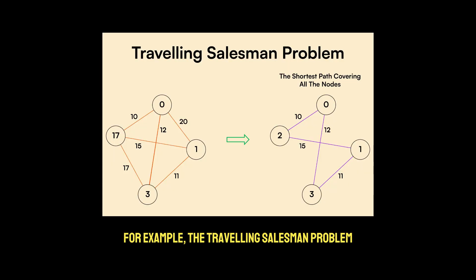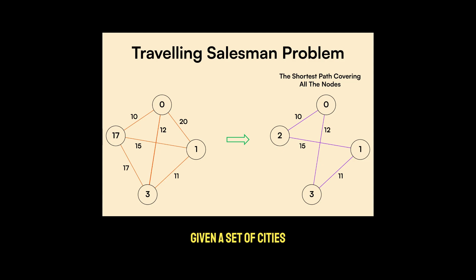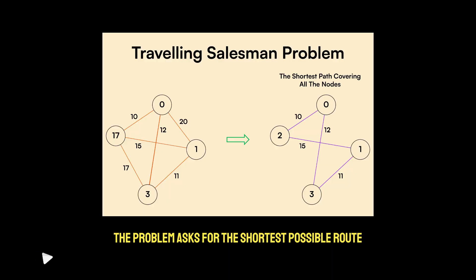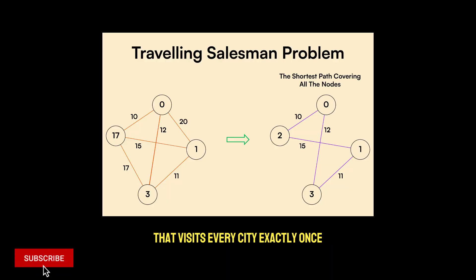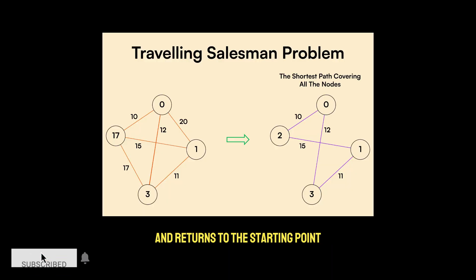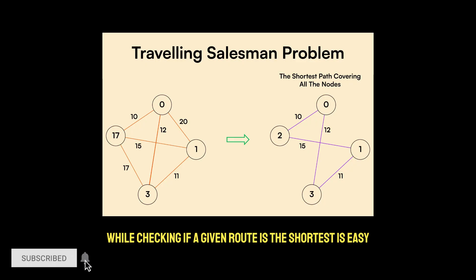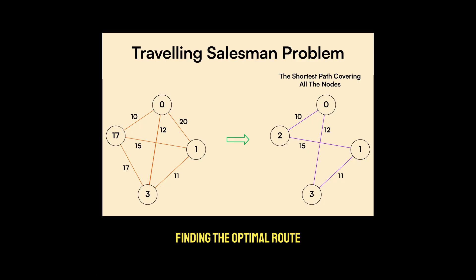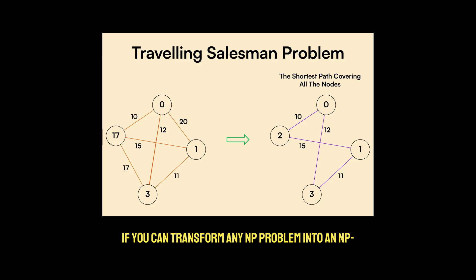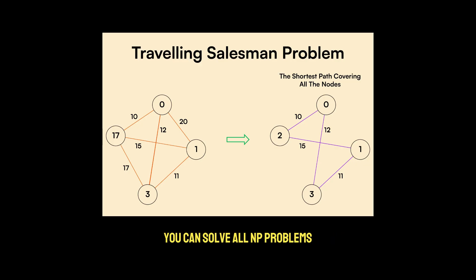For example, the Traveling Salesman Problem, or TSP, is a classic NP-complete problem. Given a set of cities, the problem asks for the shortest possible route that visits every city exactly once and returns to the starting point. While checking if a given route is the shortest is easy — you can just compute the distance and compare it — finding the optimal route is computationally challenging. If you can transform any NP problem into an NP-complete problem efficiently, you can solve all NP problems.